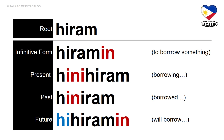Root word: hiram. Infinitive form: hiramin — meaning to borrow something. Present tense: hinihiram — borrowing. Past tense: hiniram — borrowed. Future tense: hihiramin — will borrow something.